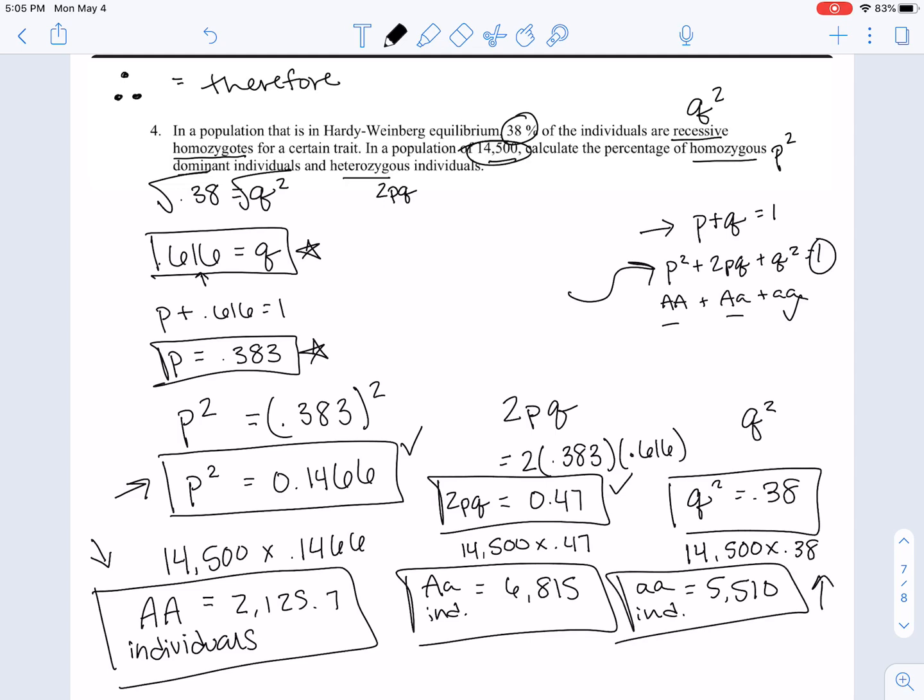So that's what I went through. Remember that this would be hetero individuals, and this one would be little a, little a individuals. And again, it gave you this information in the question. So that's how to solve all of these different types of Hardy-Weinberg equations.